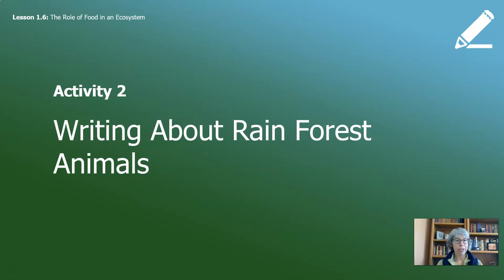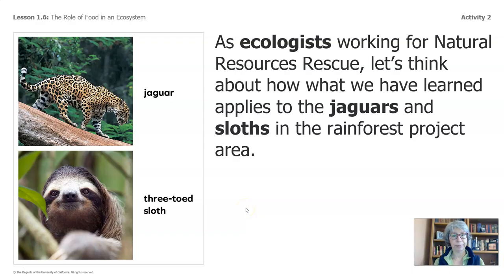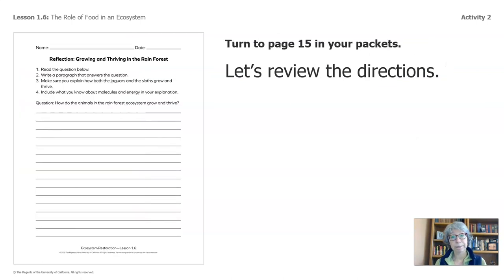Alright, moving on to the second activity: writing about rainforest animals. There's a lot of writing in this one, so make sure you take breaks. As ecologists working for Natural Resource Rescue, let's think about how what we have learned applies to the jaguars and sloths in the rainforest project area. Let's turn to page 15 in our packets and review the directions. It says: read the question below and write a paragraph that answers the question. Make sure you explain how both the jaguars and the sloths grow and thrive. Include what you know about molecules and energy in your explanation.